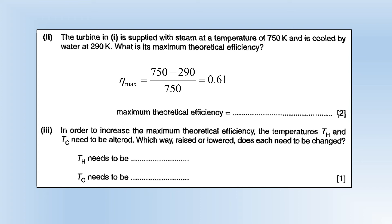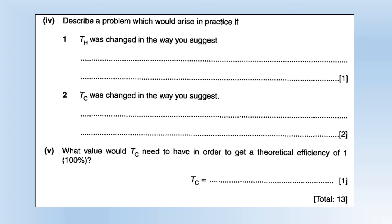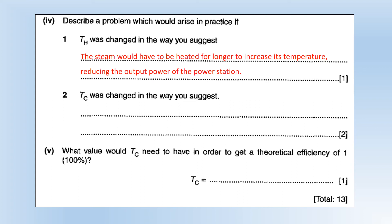To increase the maximum theoretical efficiency, the temperatures of the hot and cold reservoirs need to be altered. Rewriting the equation as 1 − T_cold / T_hot, we can increase T_hot — making the subtracted term smaller — or decrease T_cold, which has the same effect. A problem with increasing the hot temperature in practice is that you'd have to heat the steam for longer to raise its temperature, which reduces the output power. You could also note that hotter steam would lose energy to the surroundings at a higher rate, wasting more energy.